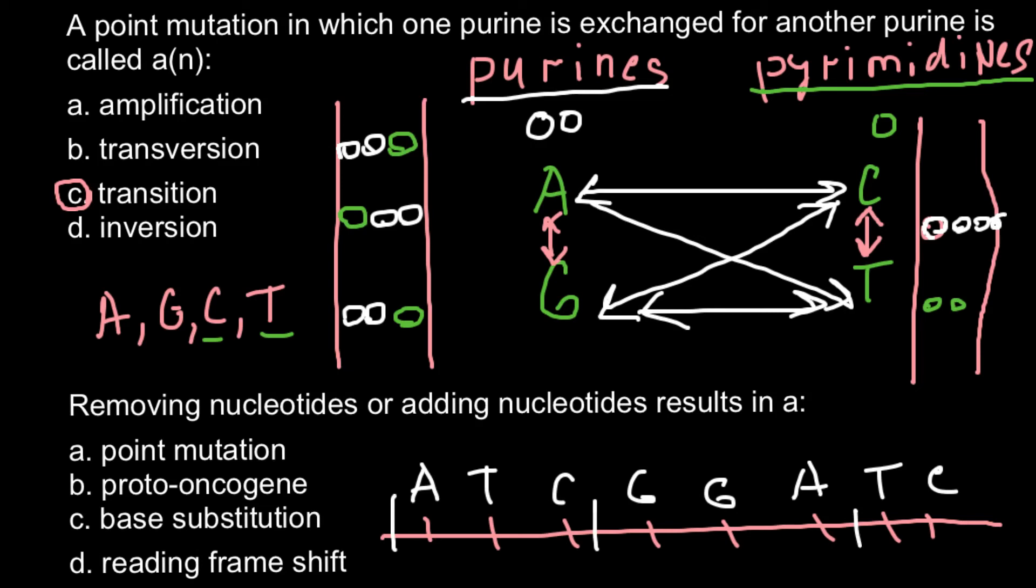If we insert here, for example, here, or it can be in any place here or here, any other nucleotide, for example C, you may say that, oh, still, this would be the same three nucleotides: A, T, and C. But actually, think about it, that here would be a frame shift.